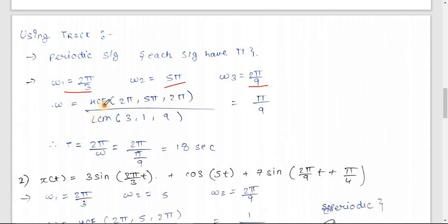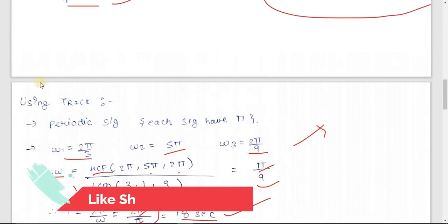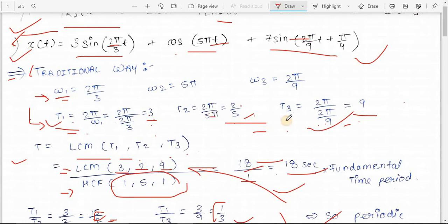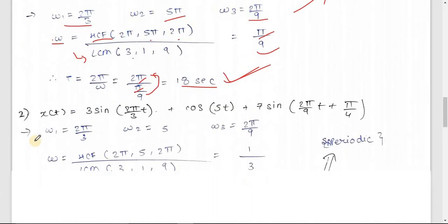Now applying the trick: ω₁ = 2π/3, ω₂ = 5π, ω₃ = 2π/9. To find ω₀, take HCF of all omegas — HCF of numerators (2π, 5π, 2π) = π, and LCM of denominators (3, 1, 9) = 9. So ω₀ = π/9. Then fundamental time period T = 2π/ω₀ = 2π/(π/9) = 18 seconds. This takes only two steps instead of three in the traditional method.